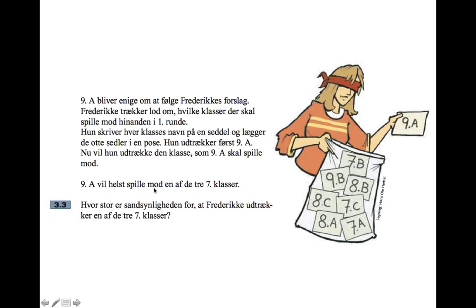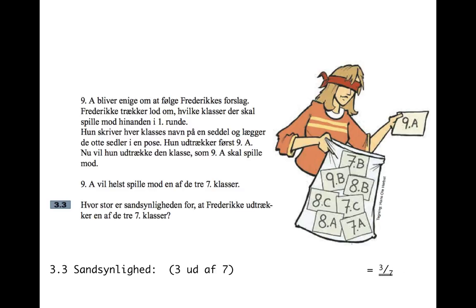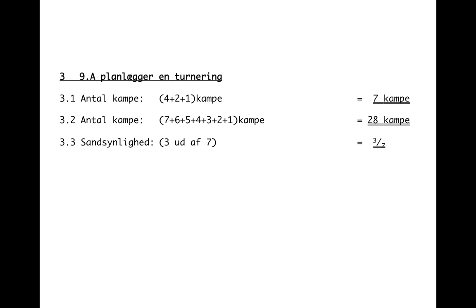9A would rather play against one of the three seventh classes. What is the probability that Frederica draws one of the three seventh classes? From the picture you can see the bag has seven things left in it and three of them are the ones she wants — the three 7th-grade classes. So it's essentially three out of seven, written as 3/7 as a fraction, or you could convert that to a decimal by doing three divided by seven. The marks for this question were four, four, four.